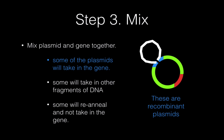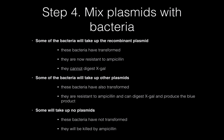There are three possible outcomes: some plasmids will take up the gene of interest, some will take in other DNA fragments but not the gene, and some will simply reattach with nothing in the gap — leaving the LAC-Z gene intact. So you have three possible outcomes.